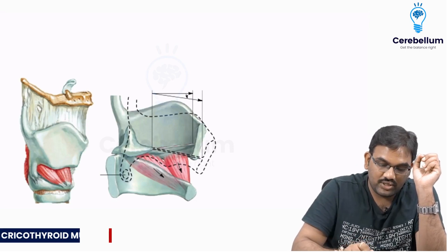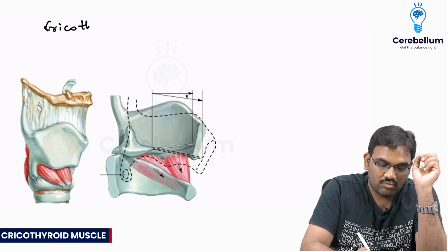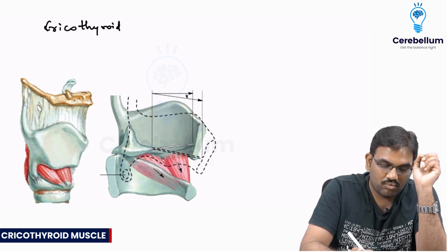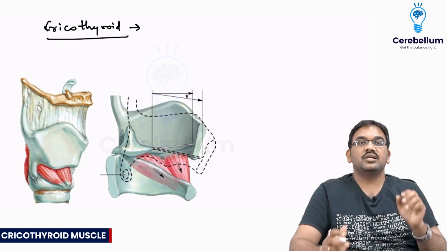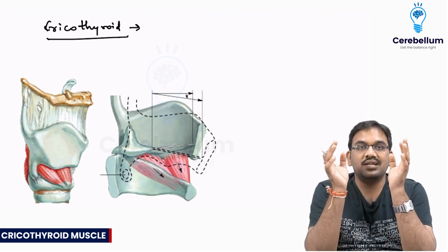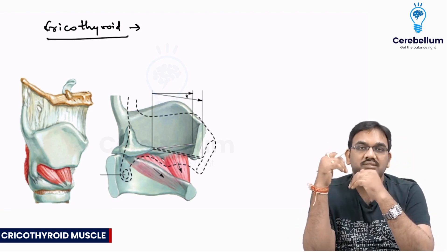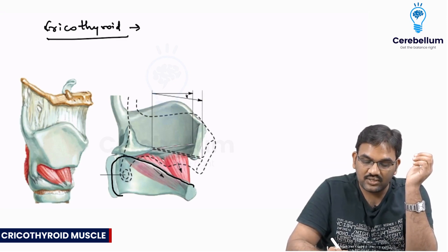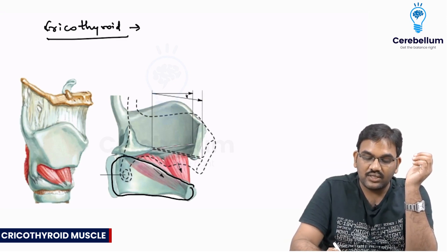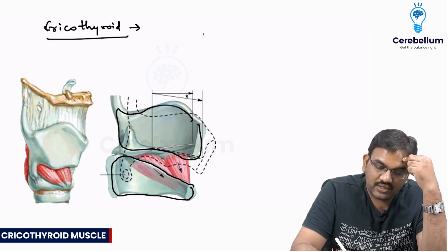This is about the cricothyroid muscle. The name itself speaks - it is in between the cricoid as well as thyroid cartilage. This is your cricoid cartilage and this is your thyroid cartilage.